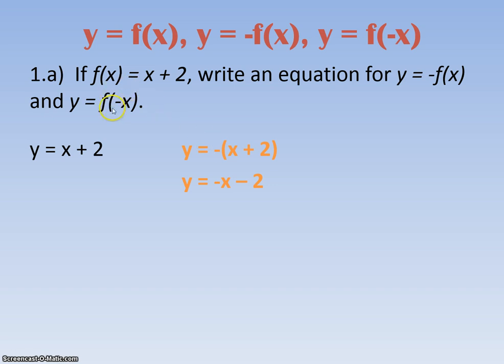What happens if I put a negative inside the function? That means that wherever you see an x in the original function, you're going to put a negative x instead. So we're going to see something like this, where we have negative x instead of x plus 2, and then taking away the brackets, the 2 is not going to change. These are three different equations. So in order to really see what happened, let's graph them.